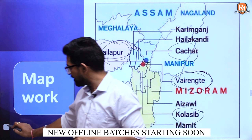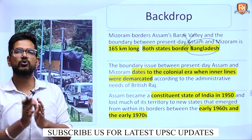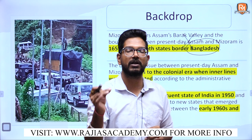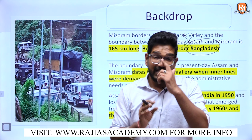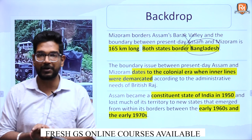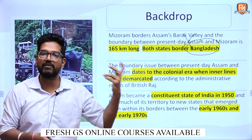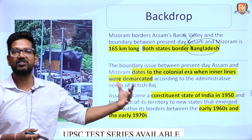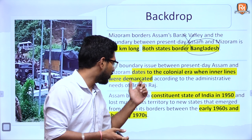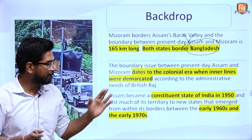Assam shares almost 165 kilometers of border with Mizoram. The main problem lies between two specific villages: Lialpur on the Assam side and Verangate on the Mizoram side. Lialpur is in the Chachar district of Assam, whereas Verangate is in the Kolasib district of Mizoram. These two areas are currently the hot spot of the problem.